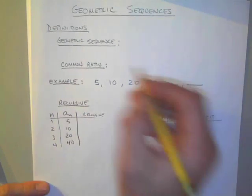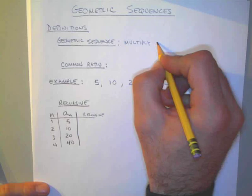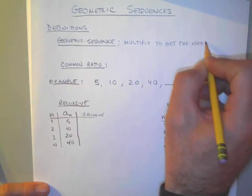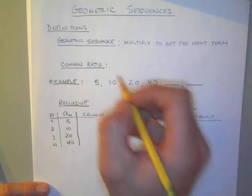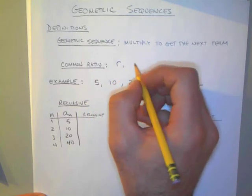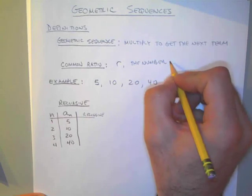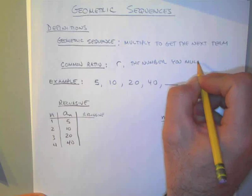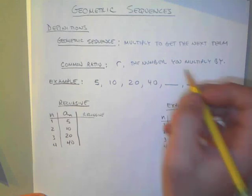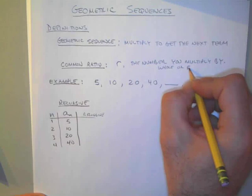A geometric sequence is when you multiply by a number to get the next term. The common ratio, which we will represent by the letter R, is the actual number you multiply by. And the number that you multiply by can be a whole number or a fraction.